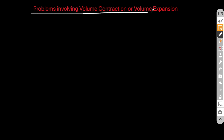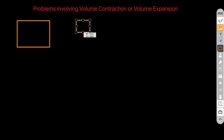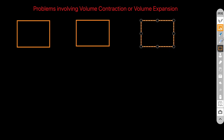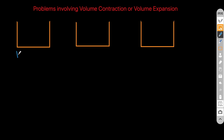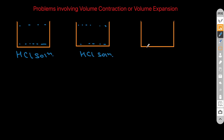Hello everyone, we are going to talk about problems involving volume contraction or volume expansion. For this purpose we'll draw three containers, where the solutions present in the first and second containers will be mixed to form the final solution in the third container. We have HCl solution in container one and container two — these two are mixed to form the final HCl solution.